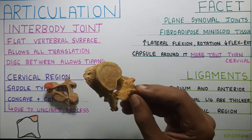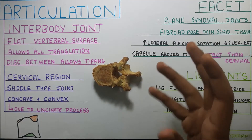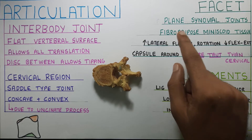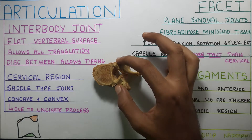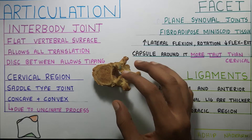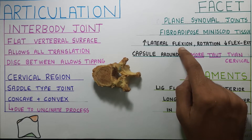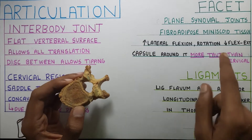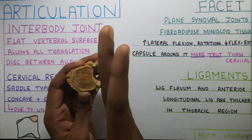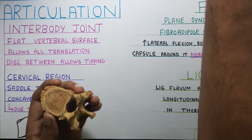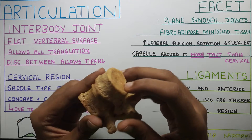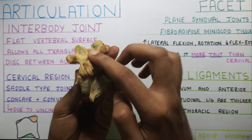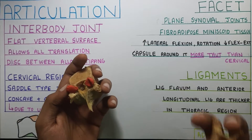Moving on to the facets — I would like to add a few more points. The thoracic facet is a plain synovial joint, as is the cervical facet joint. There is fibro-adipose meniscoid tissue present in the facet joints at all levels. Due to its orientation in the frontal plane, there is increased lateral flexion and rotation, which I discussed in the previous video. Flexion and extension are reduced because the facets are flat and oriented in a way that blocks forward movement — flexion would be blocked by the facet itself.